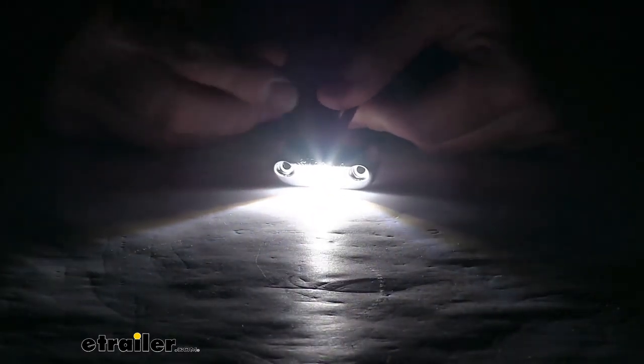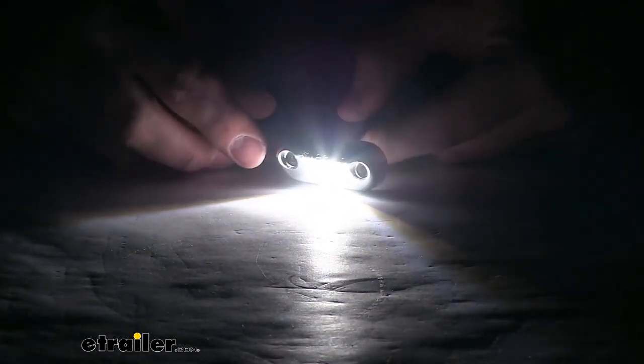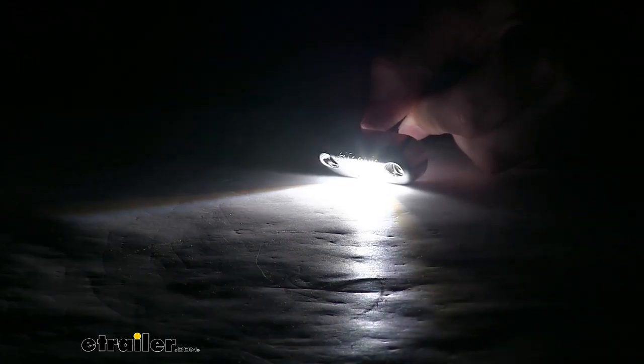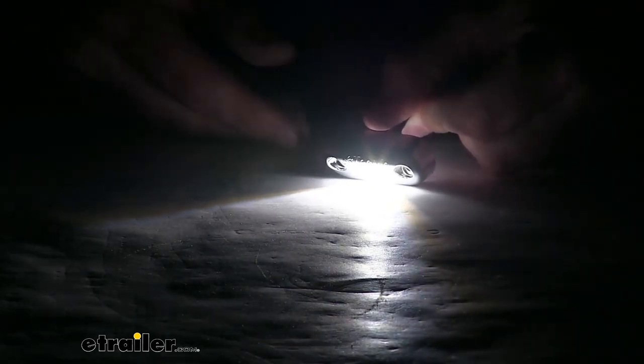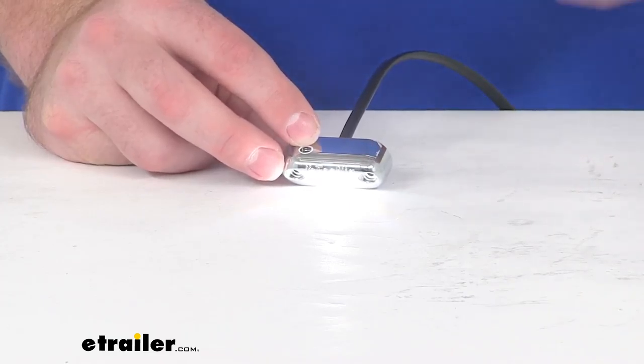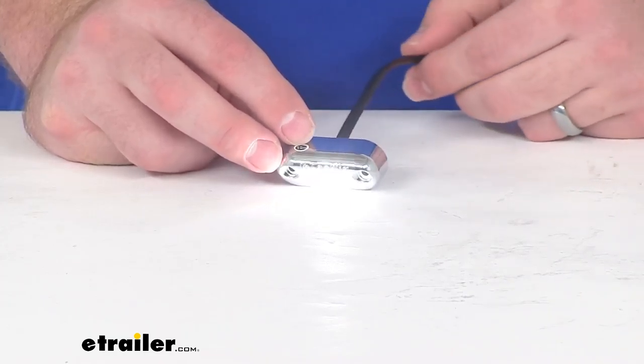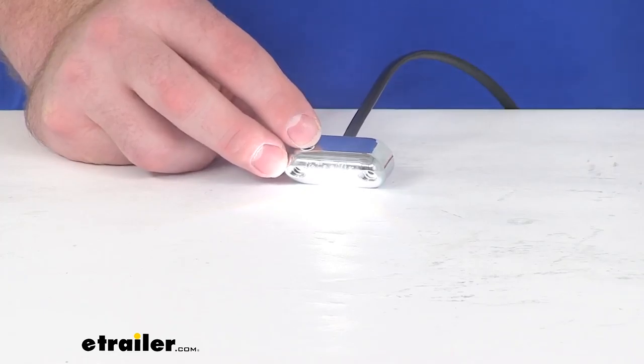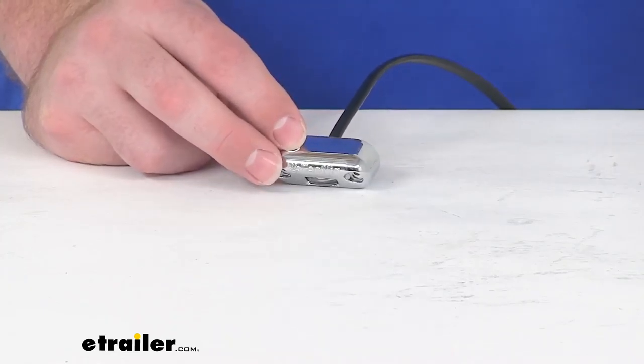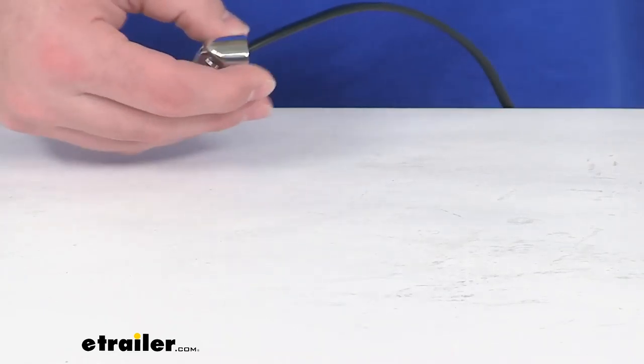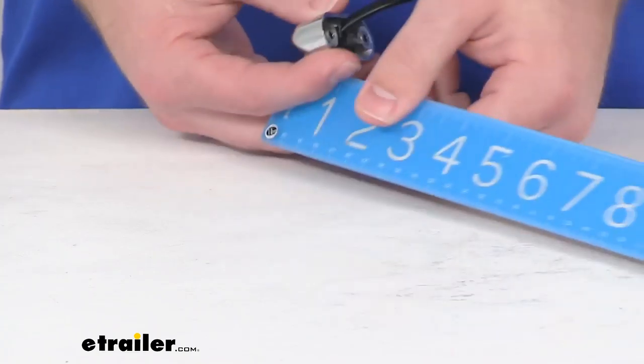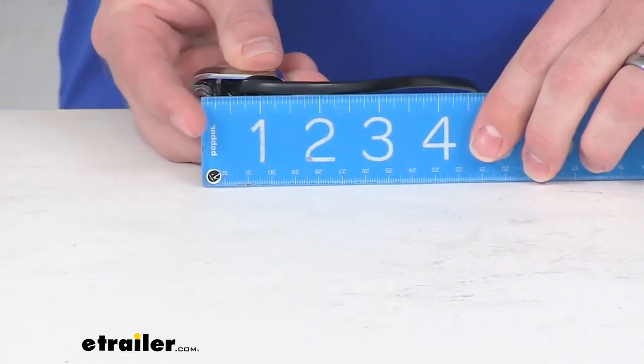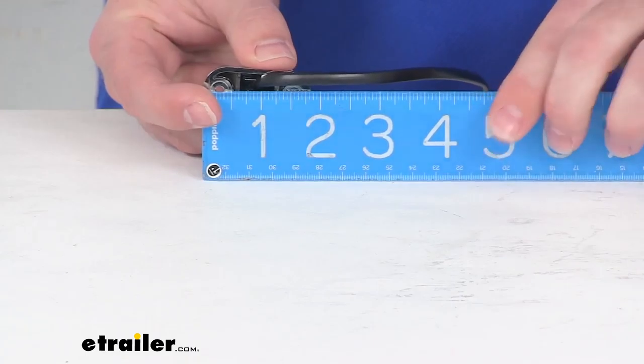You can see it does have that 45 degree angle so it is going to offer downward facing light to illuminate the area below. This does have a sealed waterproof chrome housing and a UV resistant lens unit so it's got an IP rating of 6.8, so it is going to be safe to use around your waterways and anywhere that it could potentially be exposed to water. It will hold up well for you.